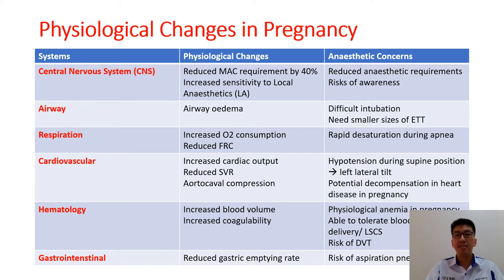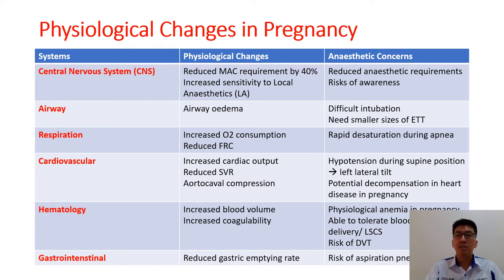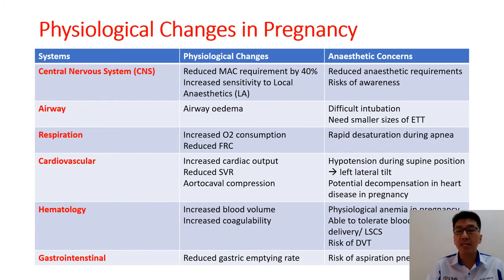Some mothers may have heart disease in pregnancy; therefore, the supine condition will predispose the mother to develop decompensation. Hematologically, there will be increased blood volume and increased coagulability. There will be physiological anemia in pregnancy, and the mother will have a capability to tolerate blood loss during cesarean section. Due to hypercoagulability, the risk of deep vein thrombosis, DVT, will be higher, and the mother should be encouraged to ambulate early.